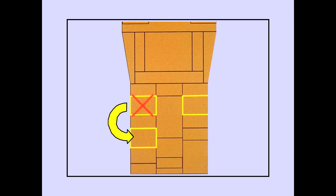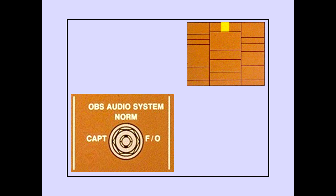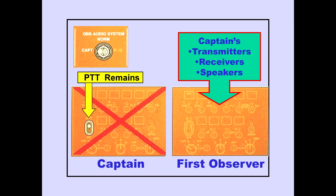Now let's look at a failed audio panel. If the captain's or first officer's audio panel fails, the first observer's audio panel can be used. The observer's audio system switch is located on the overhead panel. Selecting the captain or first officer transfers all functions to the first observer's audio panel. The push-to-talk switch on the captain's audio panel remains active.